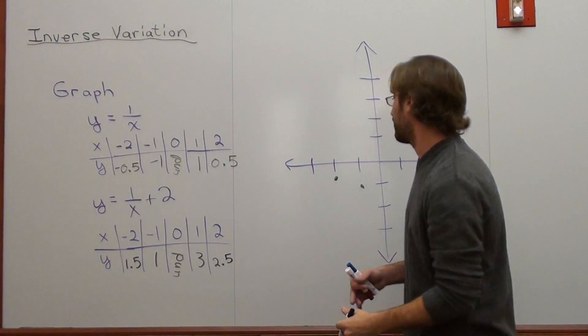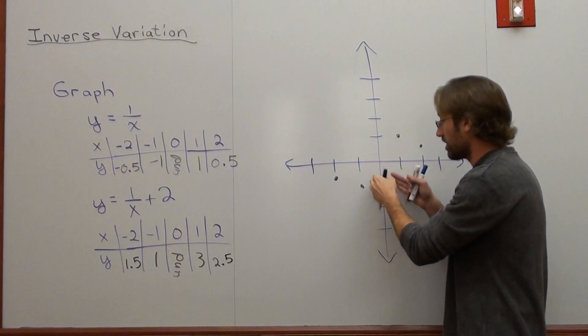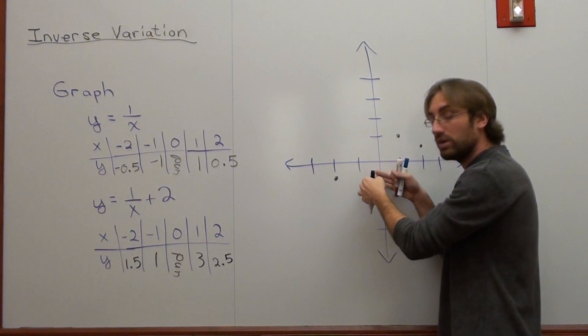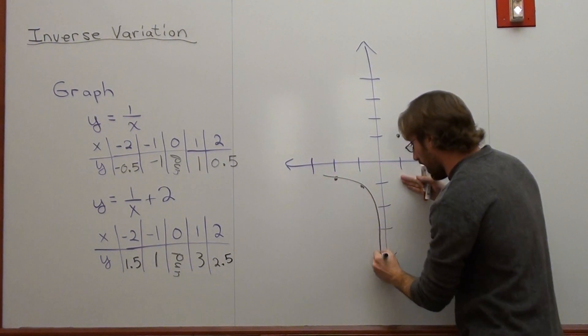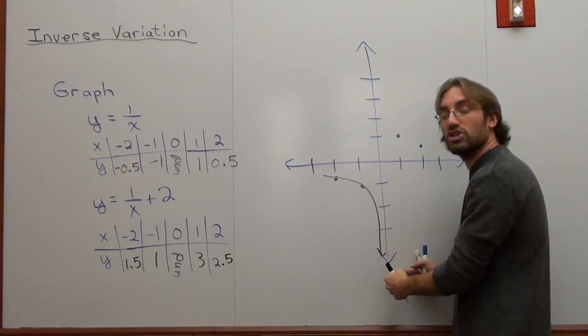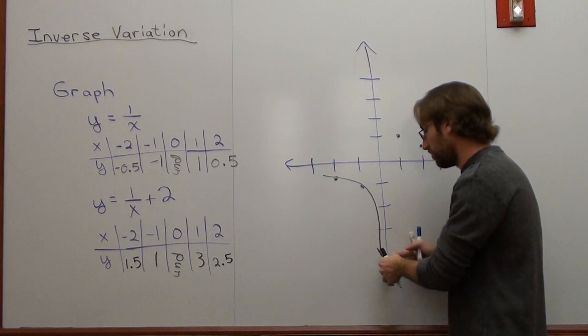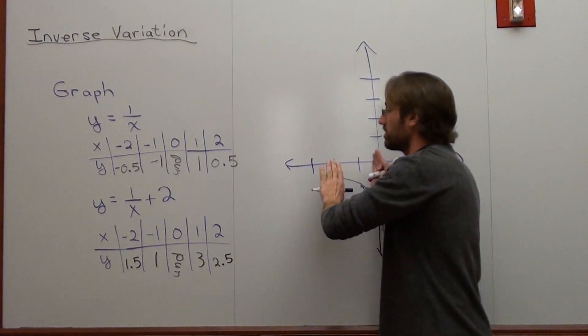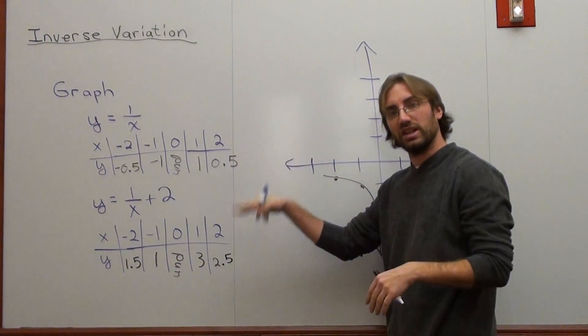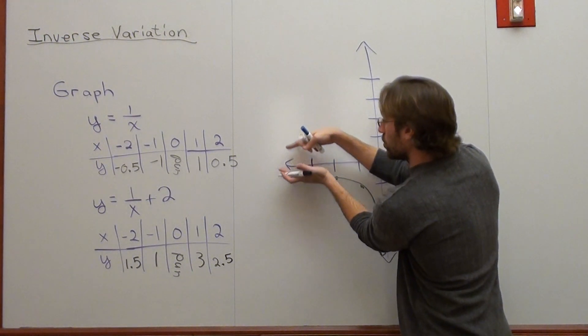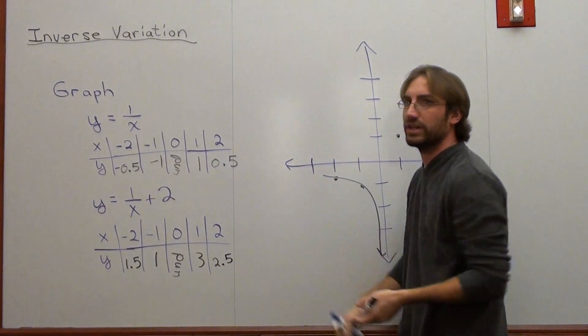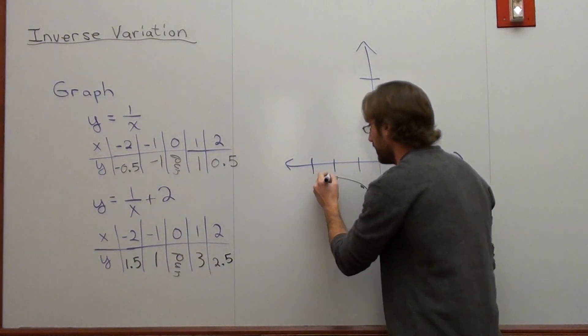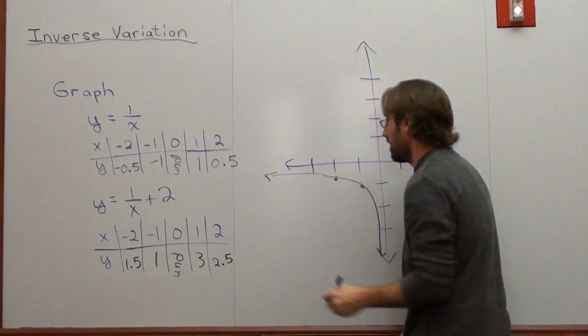But if you plug in or if you substitute in values that get closer and closer to 0, on this side, negative values that get closer and closer to 0, there's a dramatic drop. And it will never touch. No matter what value you use, it will never actually touch. And if you use values that go further on the number line to the left, it gets closer and closer to negative 0, but it will never touch.